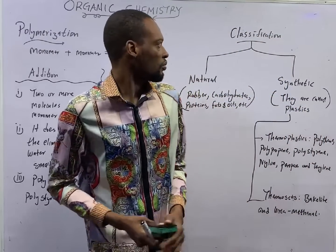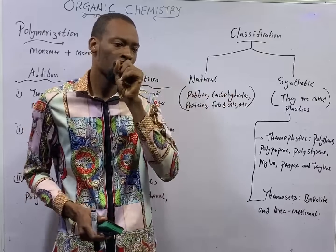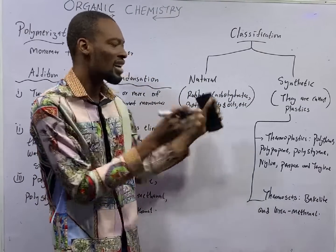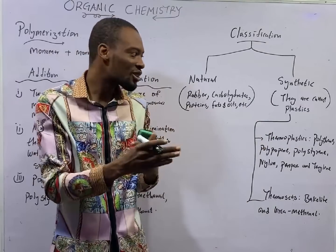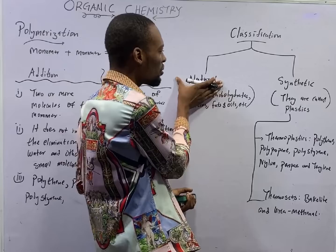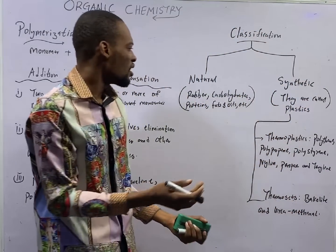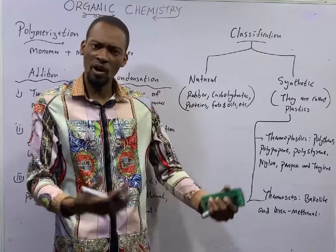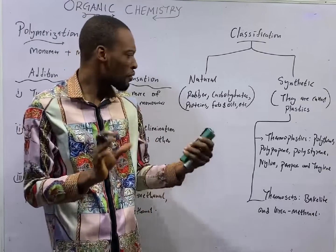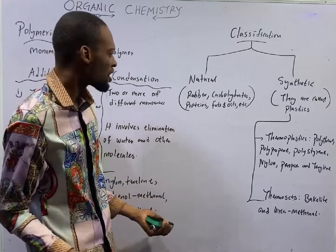All that being said, let's see the classification of polymers. Polymers can be grouped into natural polymers and synthetic polymers — natural and synthetic, or we can say natural polymers and artificial polymers. Natural polymers occur in nature; you just see smaller molecules combine to form a bigger molecule in nature, so it is not made by a man. For example, rubber.